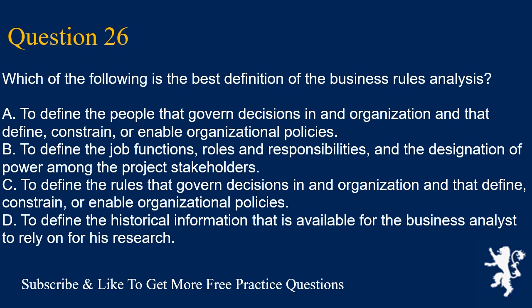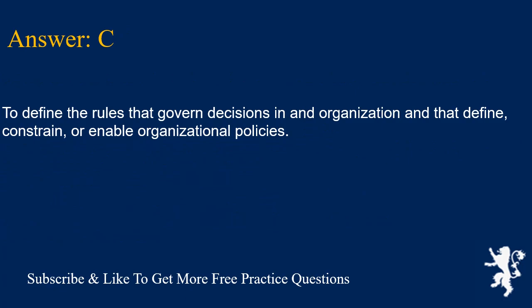Question 26: Which of the following is the best definition of business rules analysis? A. To define the people that govern decisions in an organization and that define, constrain, or enable organizational policies. B. To define the job functions, roles and responsibilities, and the designation of power among the project stakeholders. C. To define the rules that govern decisions in an organization and that define, constrain, or enable organizational policies. D. To define the historical information available for the business analyst to rely on for research. Answer is C. To define the rules that govern decisions in an organization and that define, constrain, or enable organizational policies.